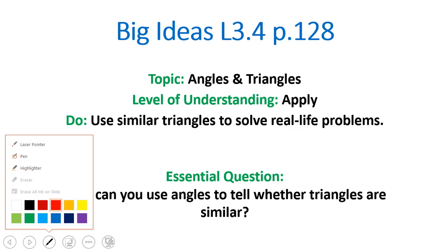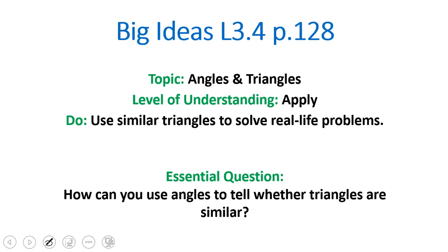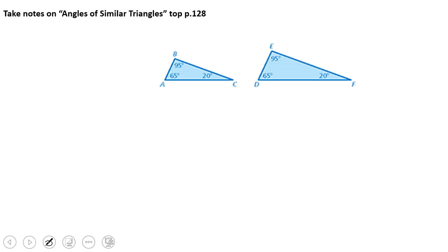Well, we have to remember that we had to take some notes from the top of page 128. And the notes from the top of page 128 said, hey, if you have two angles that are congruent from one triangle to another, then the third must be. Therefore, the triangles are similar. That's what it said, in a nutshell.